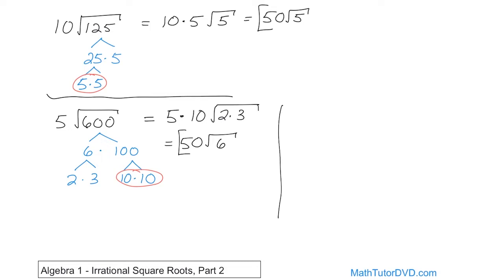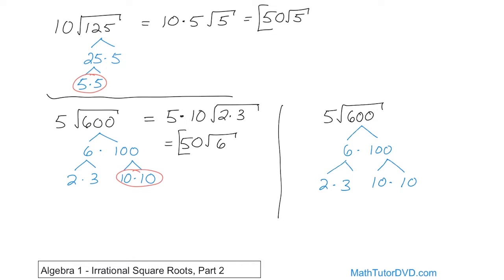Now I want to do it one more time to show you multiple ways, because even I do problems differently sometimes. So 6 times 100, with 2 times 3 and 10 times 10. Let's say I don't realize the 10 times 10 is a pair. So I continue and say 10 can be written as 2 times 5, and this 10 can also be written as 2 times 5. Now everything is down at the bottom of the tree as primes: 2, 3, 2, 5, 2, 5.